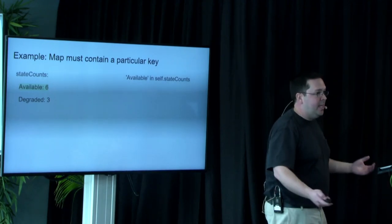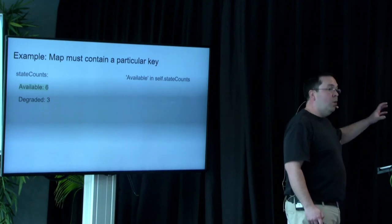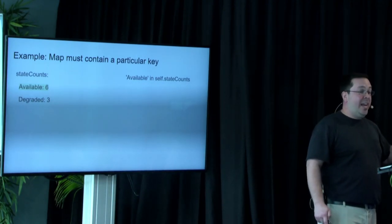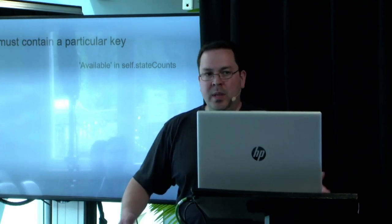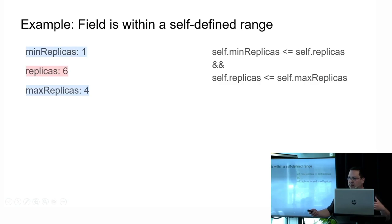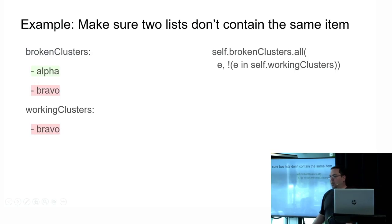Running through a few examples here, one common one is map must contain a particular key. The YAML that is being validated is on the left, and the expression that makes it, that actually does the validation is on the right. Another one where I have a min, a max, and a current. You can see that I can compare the values to each other. You can't do this with OpenAPI validation. Another final example is I have a custom resource tracking broken clusters and working clusters. It can't be broken and working at the same time, so my validation makes sure that can't happen.